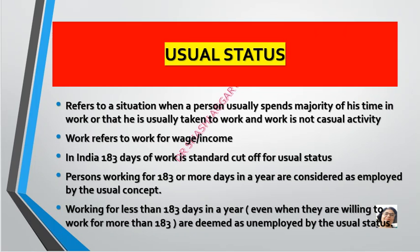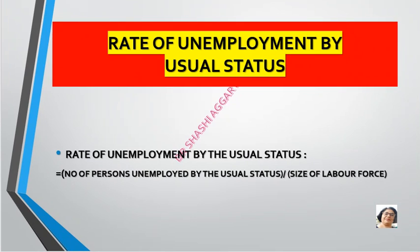In India, if a person gets work and receives wages and income, but that activity is not casual, it is considered under usual status. A person working for 183 days or more in a year is considered employed by usual status. If a person is working for less than 183 days in a year, even when willing to work for more, and is not getting the work, we consider them unemployed by usual status. The rate of unemployment by usual status is the number of persons unemployed divided by the size of the labor force.